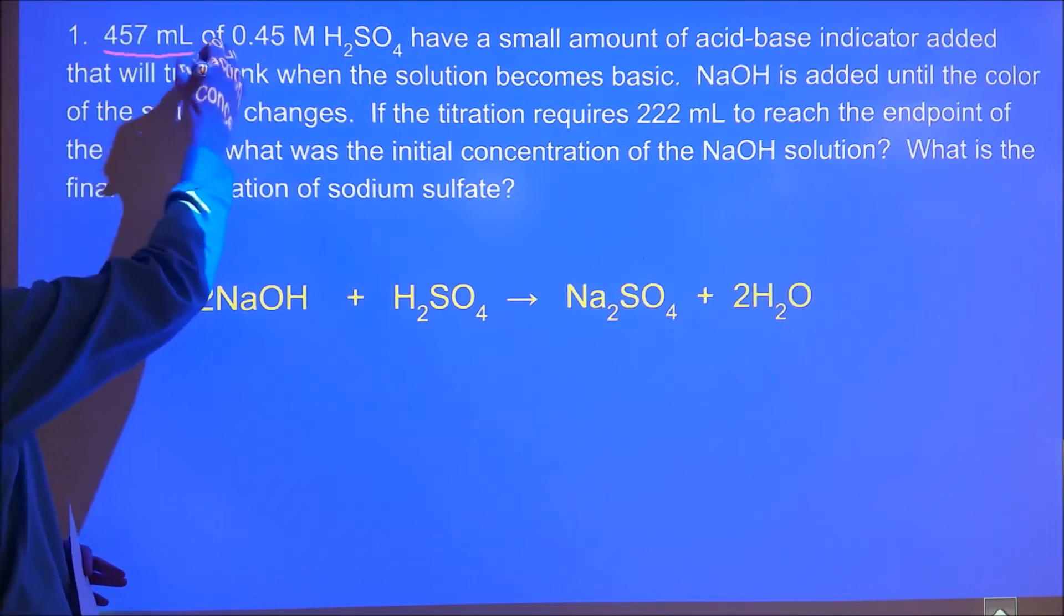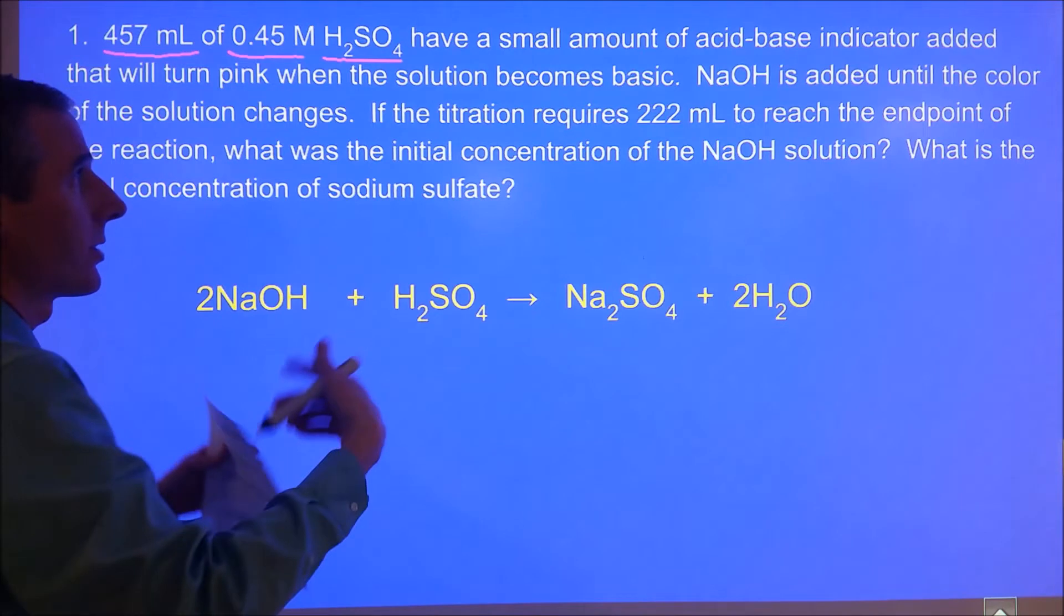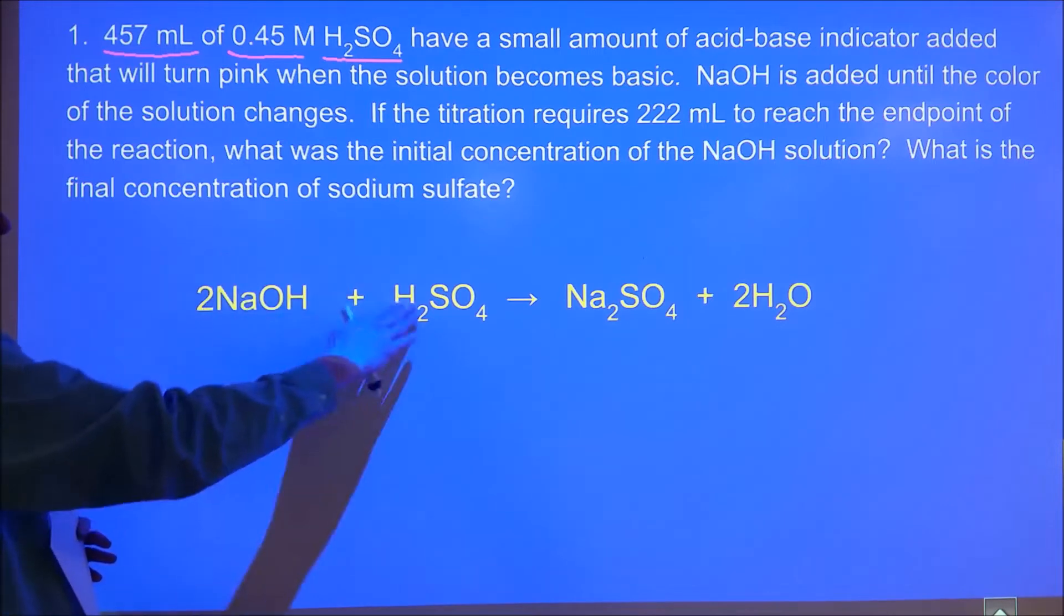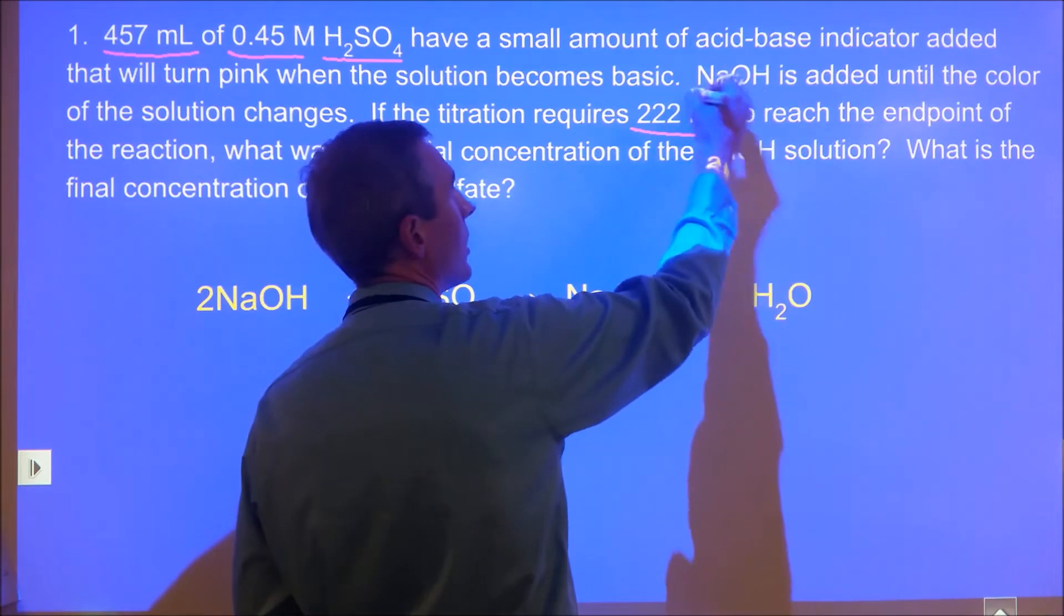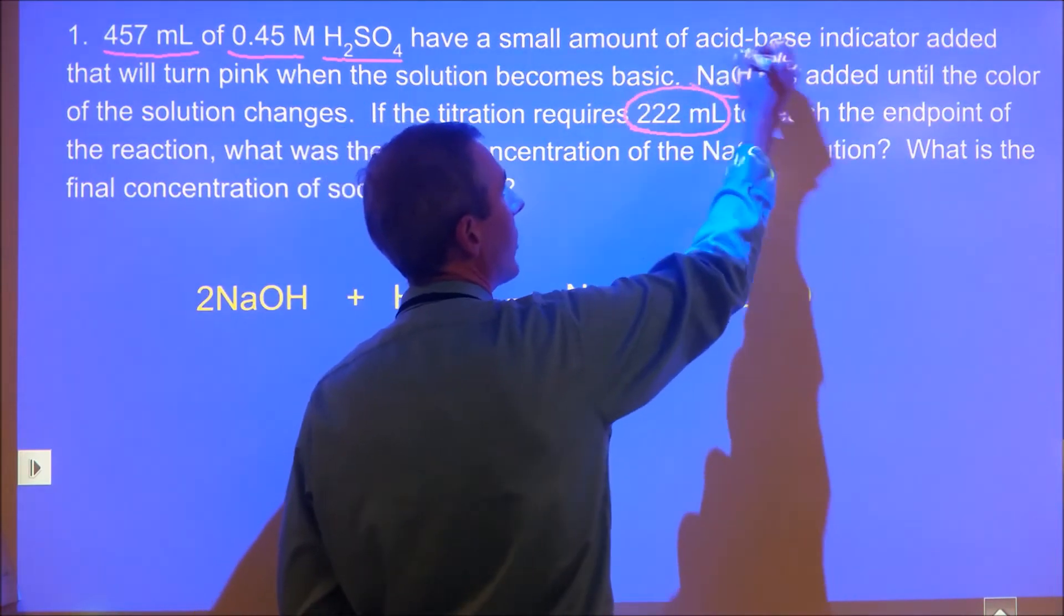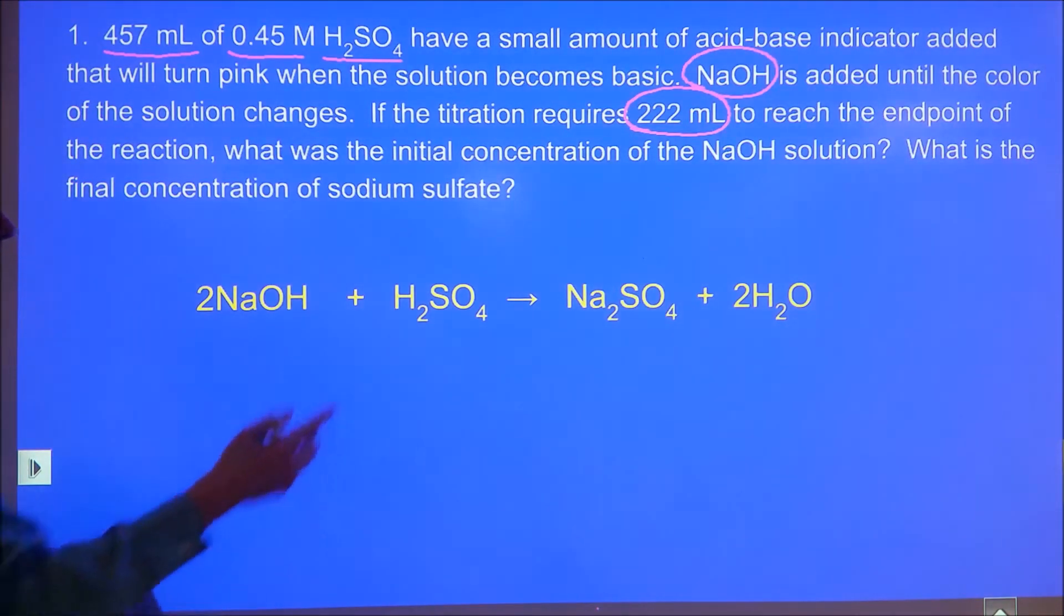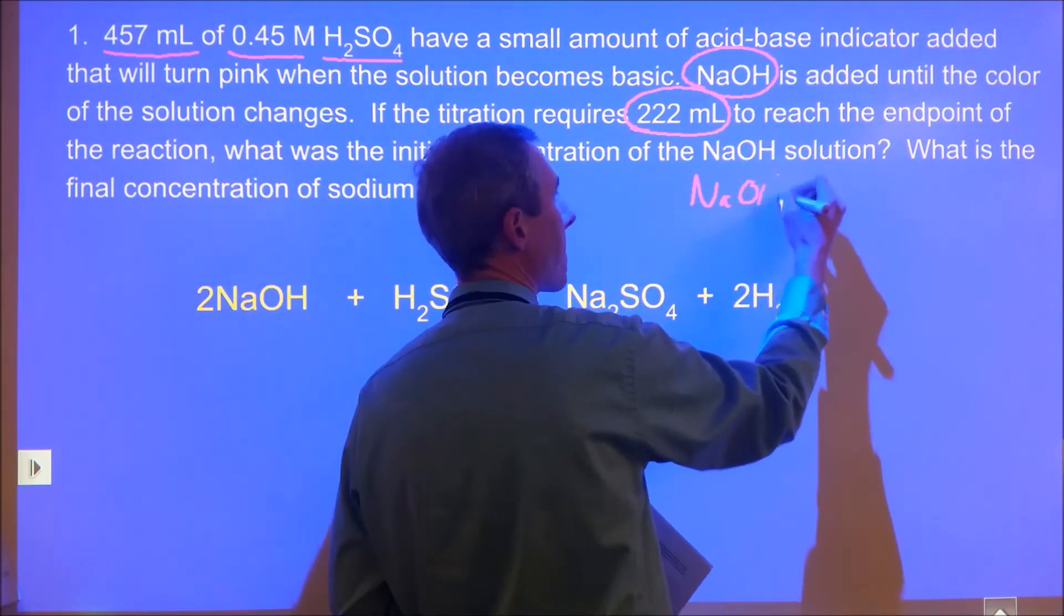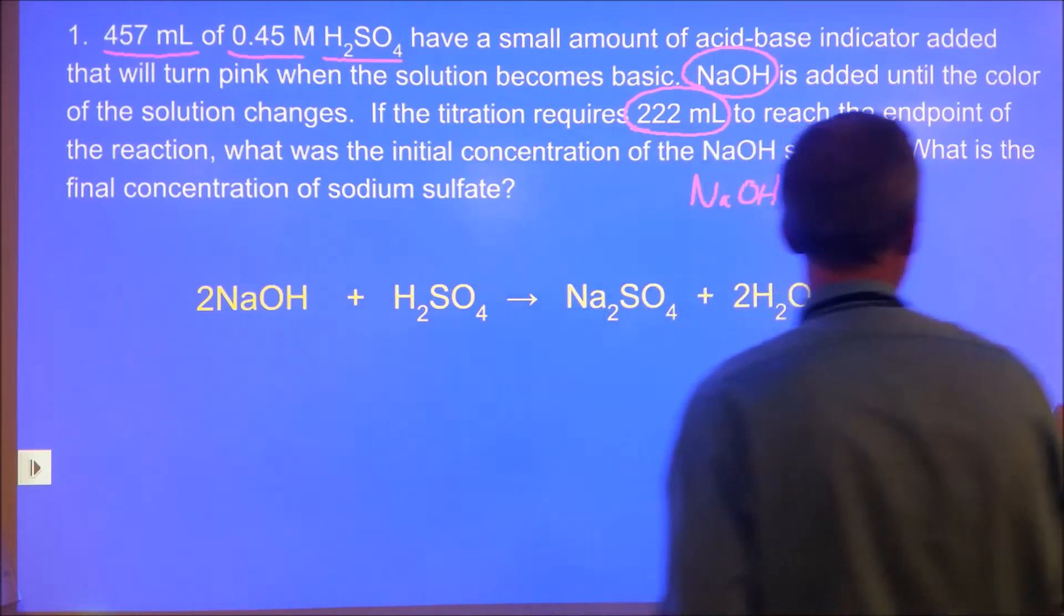The first one here looks at concentration chemistry applied with stoichiometry. We have a volume and concentration of sulfuric acid, and sodium hydroxide is added until a color change indicating equivalence has happened. That color change occurs at 222 milliliters for the NaOH, and the question asks what was the concentration of the sodium hydroxide.